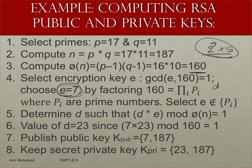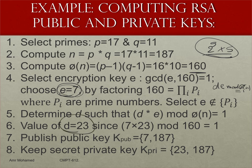D times E mod totient of N equals 1. So D is the multiplicative inverse of E modulo the totient of N. Once we select E, the calculation of D becomes unique. E has multiple values but D is unique. Once we select E as 7, D happens to be 23. All of this is based on the assumption that we know the totient of N, which in turn requires knowing P and Q.